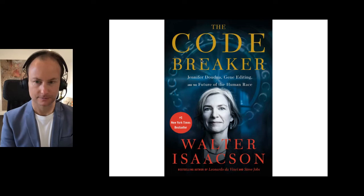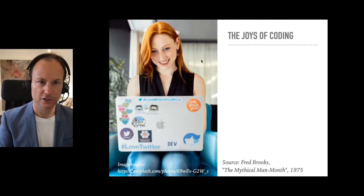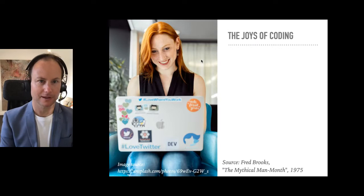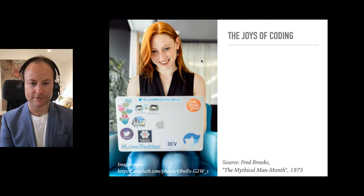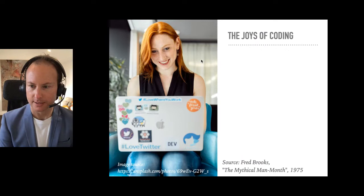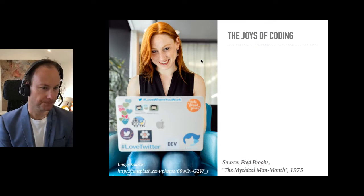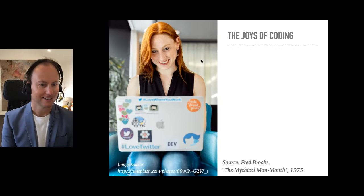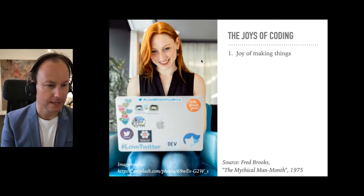Now I'd like to focus on the joys and then the woes of coding. This list of five joys and five woes is a summary from a book by Fred Brooks, who was the person in charge of building the IBM 360 mainframe computer and a professor of computer science. He wrote a book in 1975 with timeless wisdom. First up, there's the sheer joy of making things, just like a child delights in making a mud pie.